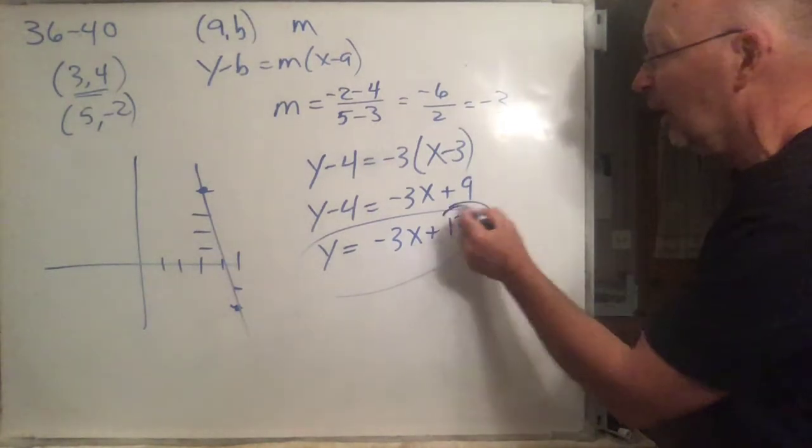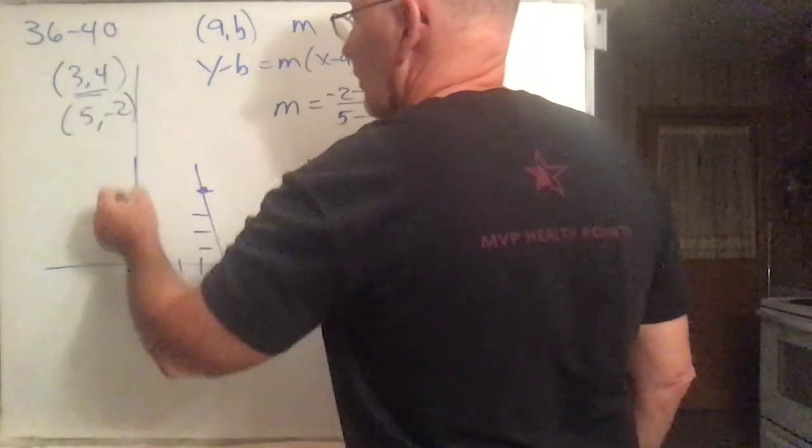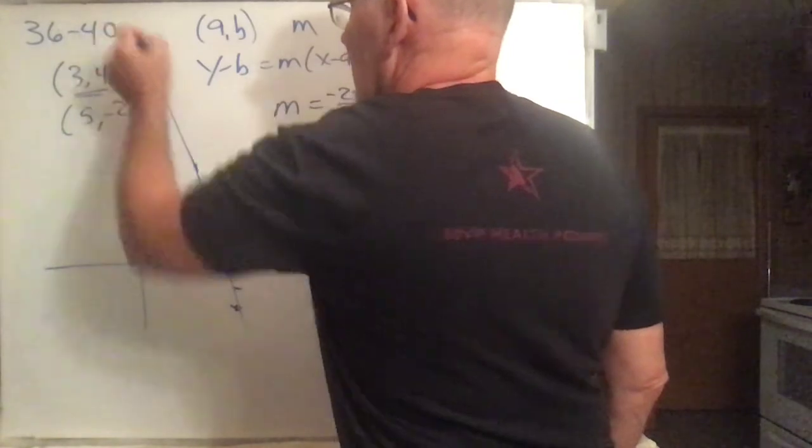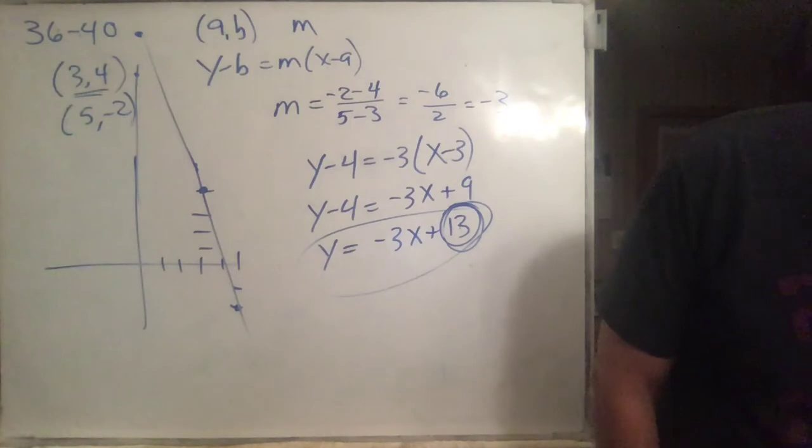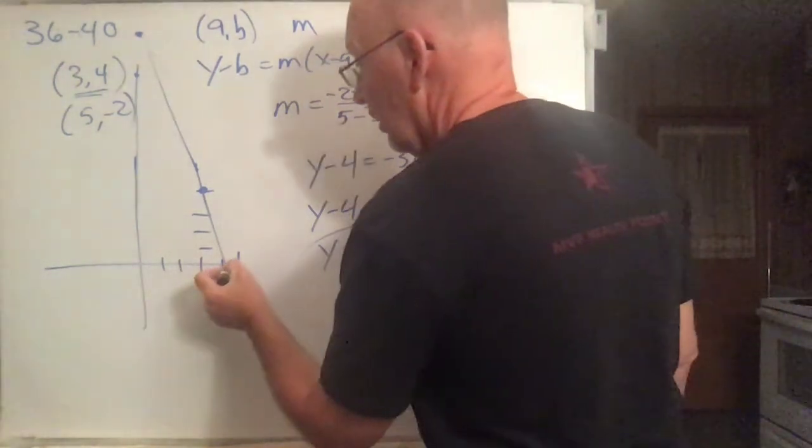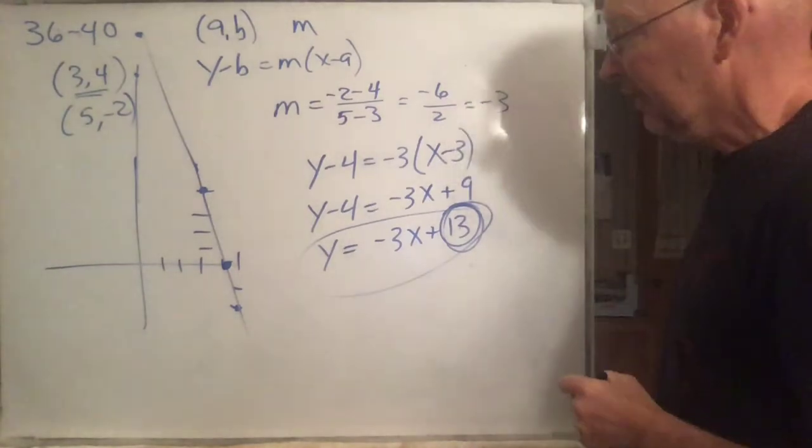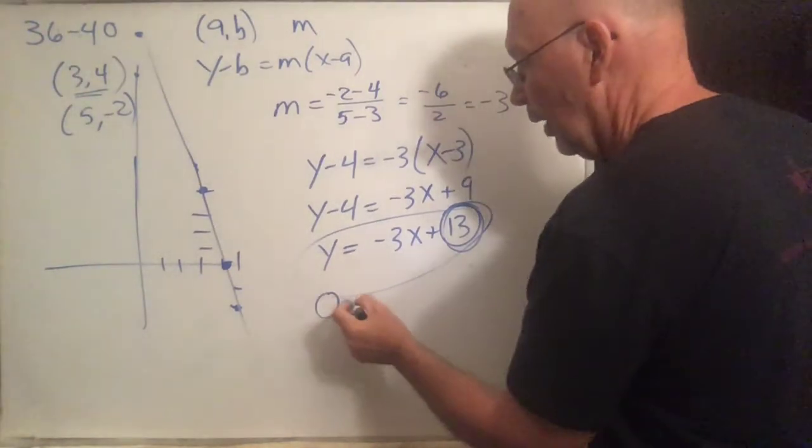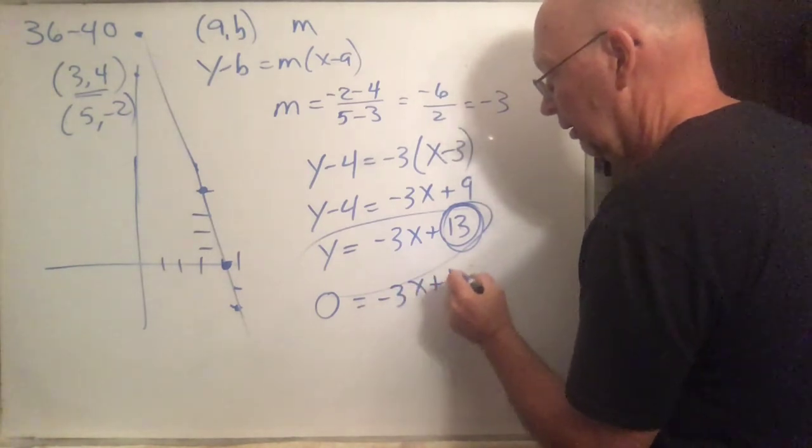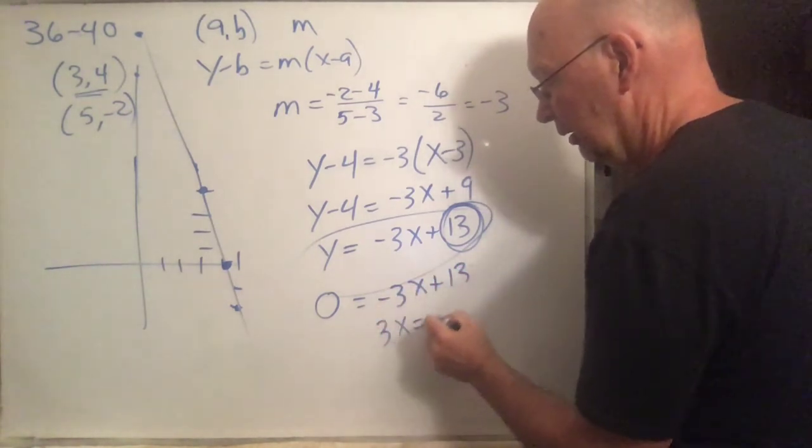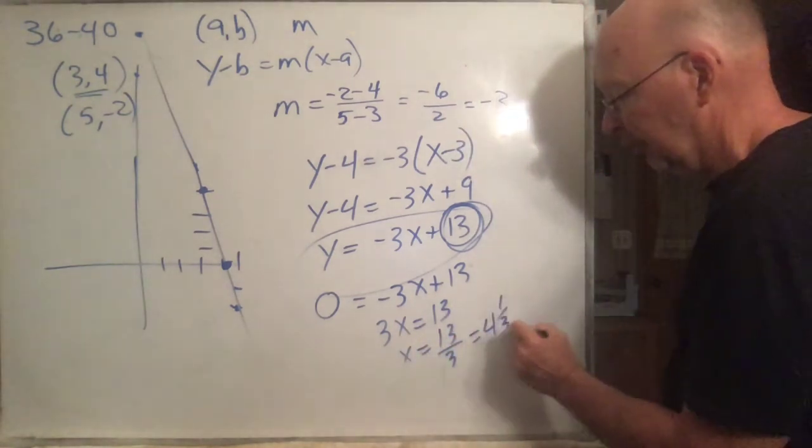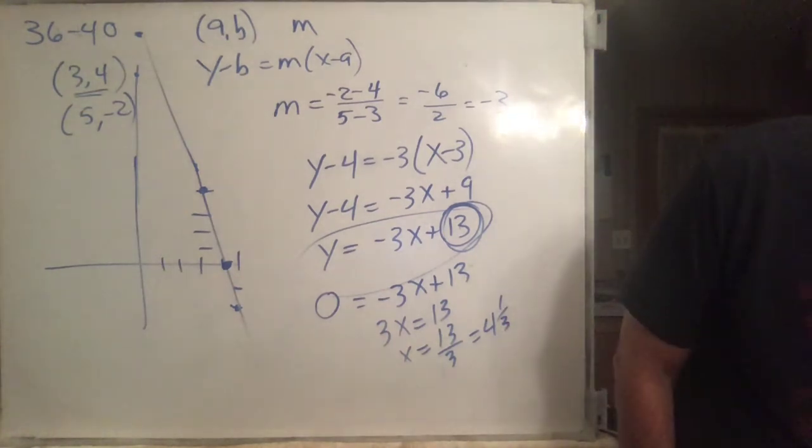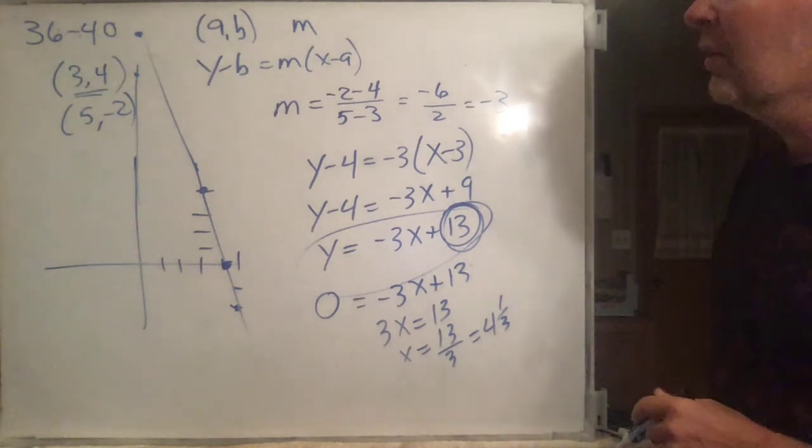The y-intercept, there's the y-intercept right there. It's going to be up here at 13. When x is 0, it's going to be 13. And finally, we want to know the x-intercept. What's the x-intercept? That's going to be there someplace. The x-intercept is when y equals 0, so you set y equal to 0. Bring the 3x over, x equals 13 thirds. 13 thirds is the same as 4 and a third. So I see 13 thirds there. Yep, there it is.